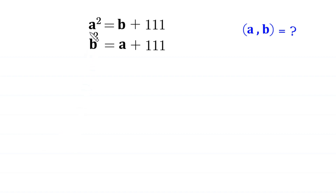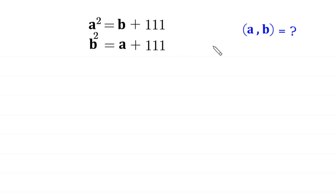Welcome to how to solve this very nice system of equations. A squared is equal to b plus 111, and b squared is equal to a plus 111. We need to find all possible values of a and b.